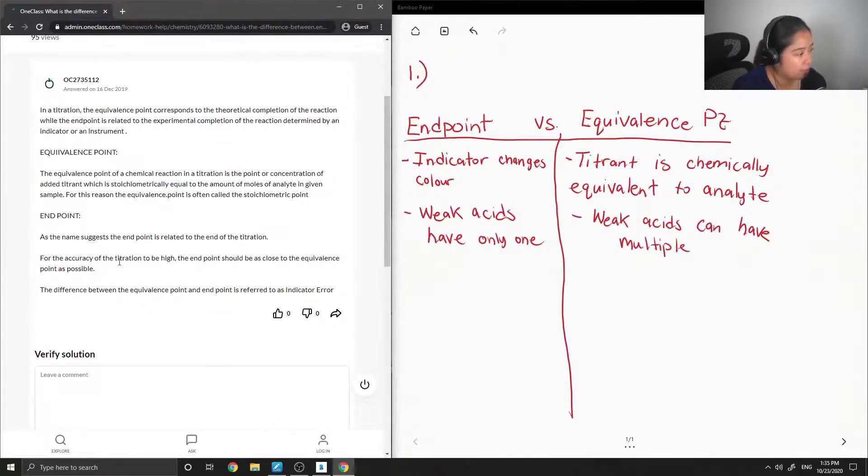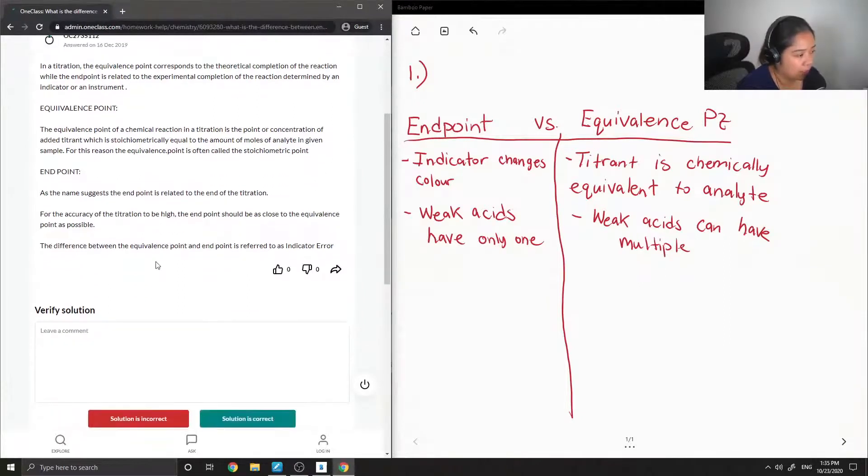For the accuracy of the titration to be high, the endpoint should be as close to the equivalence point as possible. The difference between the equivalence point and endpoint is referred to as indicator error. That was a great answer, so this solution is correct.